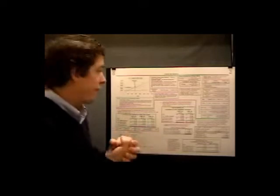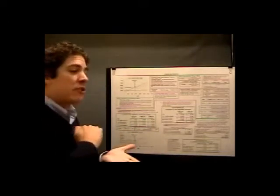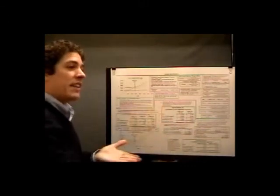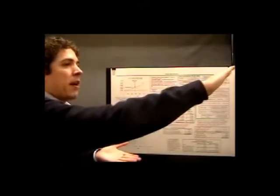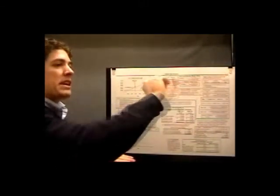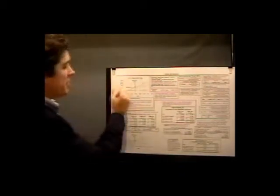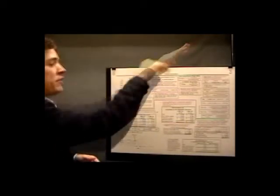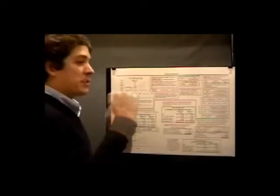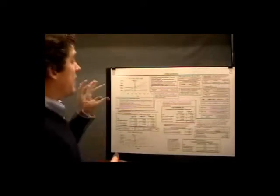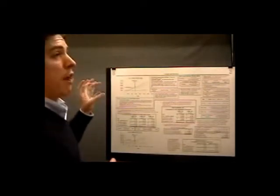As we increase units, our fixed cost stays the same, but now our variable costs kick in — and that's why the green goes up, because it's a mix between our fixed and variable. Our sales start at zero, with zero units and zero dollars, but that goes up as we sell units and increase dollars. That's the cost-volume-profit graph.